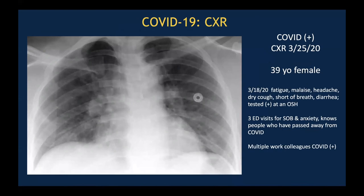Here's a COVID-positive 39-year-old woman with a chest X-ray. She presented a week earlier with fatigue, malaise, headache, dry cough, shortness of breath, and some GI symptoms. She tested positive at an outside facility, and after three emergency department visits because of shortness of breath and anxiety, she comes back to the emergency department with some subtle ground glass type alveolar opacities and perhaps a little patchy consolidation at the bases. However, it's very hard, in the setting of such poor inspiration, to identify whether this is hypoventilatory atelectasis or true COVID alveolar disease.